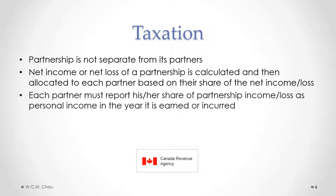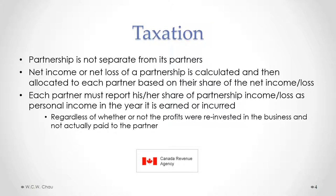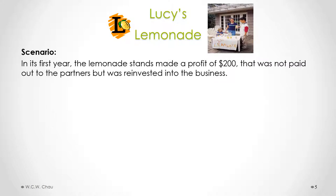The profit or loss is allocated to each partner, and each partner must report their share of the partnership income or loss as personal income in the year it is earned or incurred. This must be reported regardless of whether profits are kept and reinvested in the partnership, because the partnership and the partners are one and the same — if the partnership had a profit, the partners personally earned and received that profit.